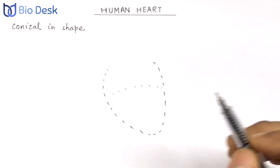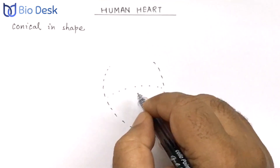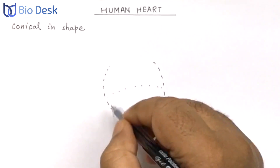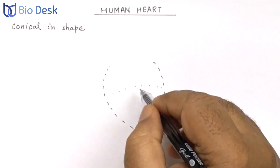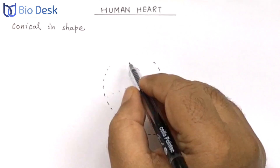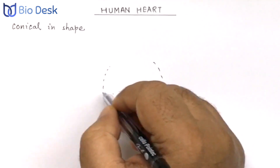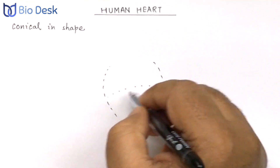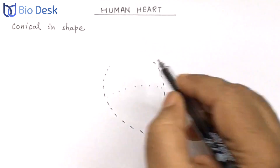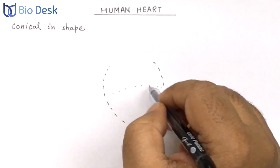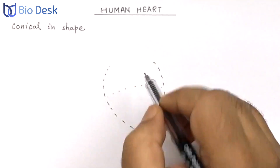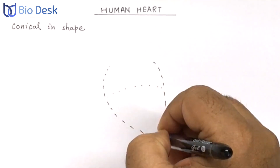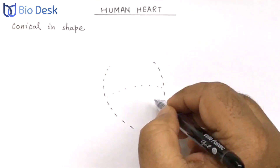First draw a conical shape, keeping in mind that the anterior upper part is smaller and the lower posterior part is larger. This side denotes the right part of the auricular region — the right auricle, also called the right atrium — and this one is the left auricle. The ventricular part is further divided into right and left parts.